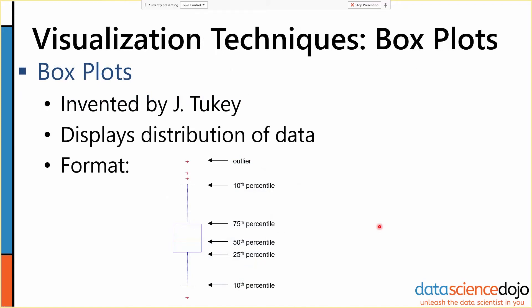Another very common visualization technique is the box plot. The box plot displays the distribution of data. We've got a box where the edges are the 75th and 25th percentiles. The median, or the 50th percentile, is shown as a middle bar. Then we show the 10th and 90th percentiles above, and if there are any outliers — which are a certain distance past the 90th and 10th percentiles — we mark them explicitly.